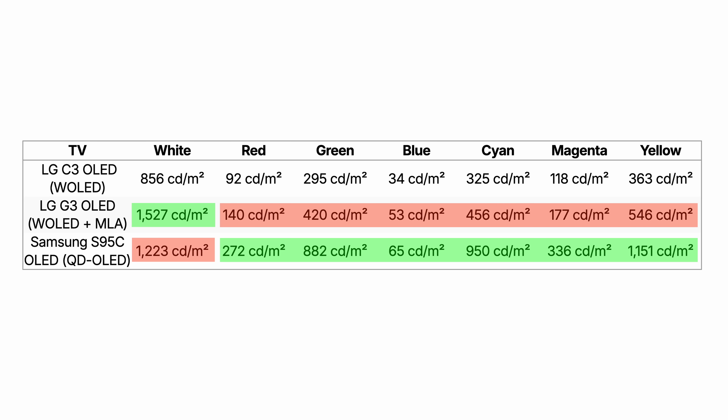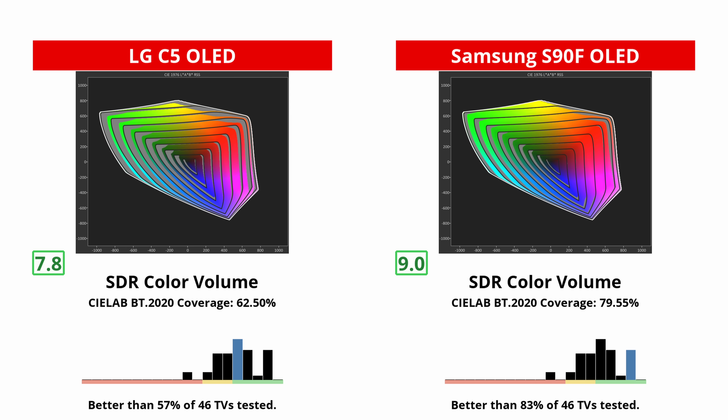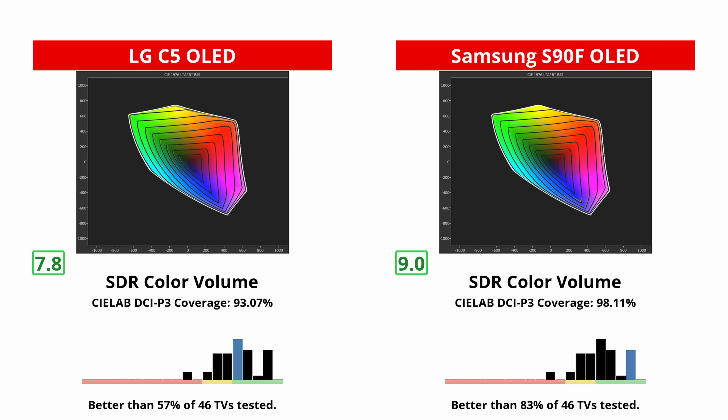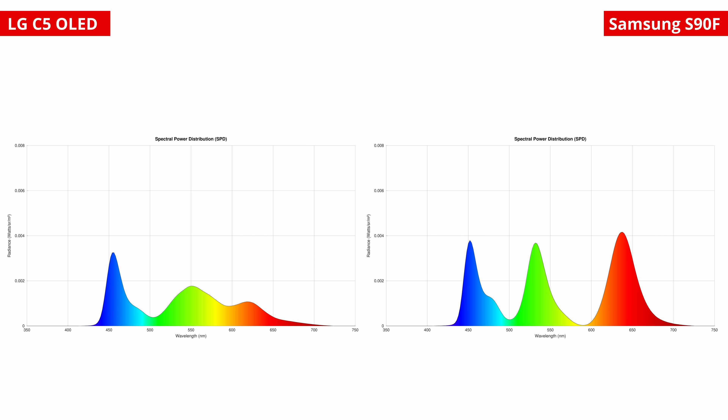QD OLEDs are still largely undefeated for color volume and color brightness. If we look at the gamut rings on the LG C5 compared to the Samsung S90F, colors on the C5 are noticeably desaturated at high luminance levels versus the S90F. We can get even more insight by looking at the spectral power distribution of each panel. The Samsung has much more defined blue, green, and red peaks compared to the LG, which means better color purity, which in part leads to its better color volume.